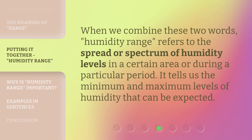When we combine these two words, humidity range refers to the spread or spectrum of humidity levels in a certain area or during a particular period. It tells us the minimum and maximum levels of humidity that can be expected.